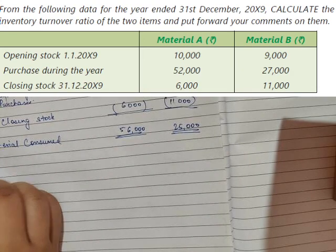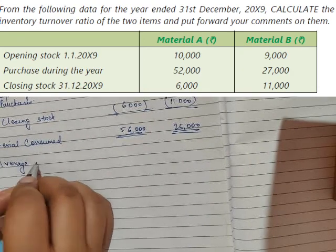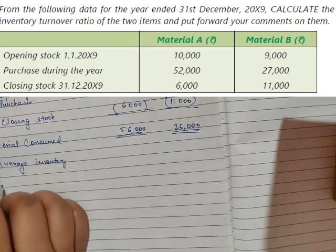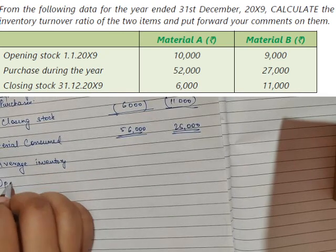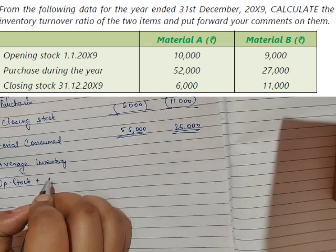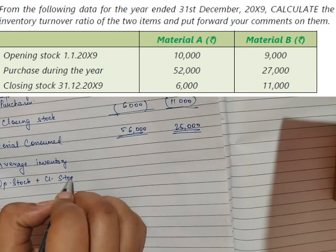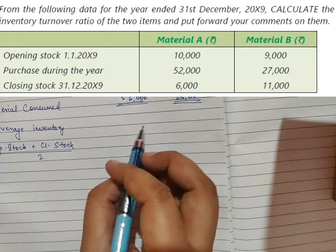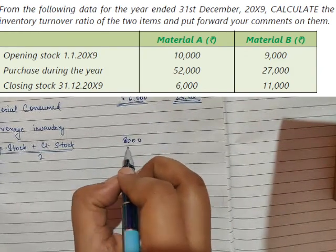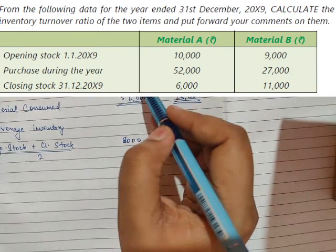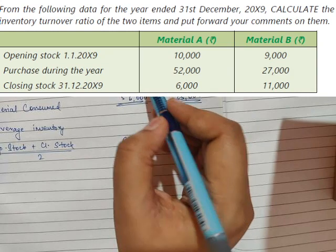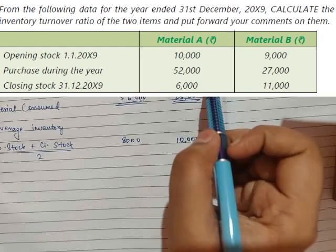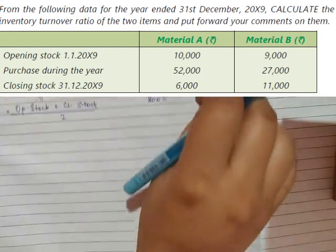Next we need the average inventory. Average inventory is calculated by opening stock plus closing stock divided by 2. For material A we have ₹8,000, that is (10,000 + 6,000) ÷ 2, and for material B we have ₹10,000, that is (9,000 + 11,000) ÷ 2.